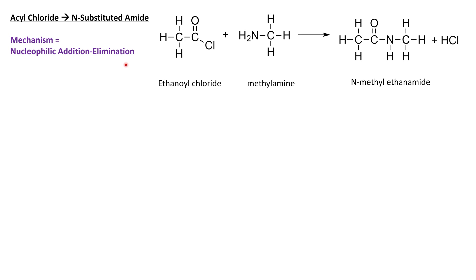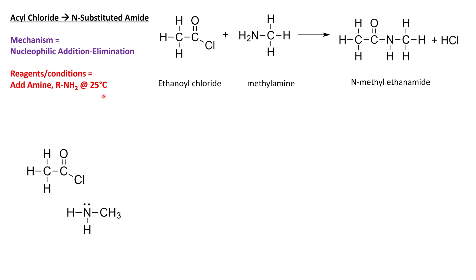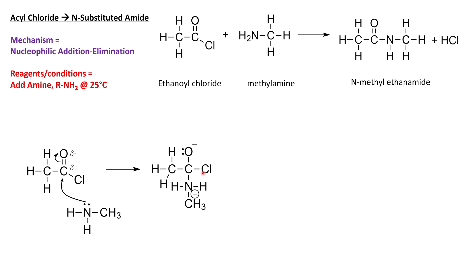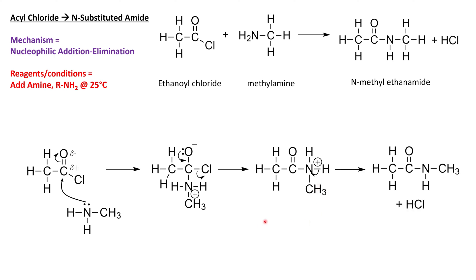Our mechanism is again nucleophilic addition elimination — all we need to do is add an amine to the acyl chloride, and this reaction will occur at room temperature. Let's examine our mechanism. Our amine acts as our nucleophile; it has a lone pair and we have a polar carbonyl bond. The lone pair from the nitrogen attacks the delta positive carbon, causing the carbonyl bond to break. We then eliminate the chloride ion by reforming the carbonyl, giving another positively charged intermediate. We move a pair of electrons from a N–H bond onto the nitrogen to get rid of H⁺, which pairs up with the chloride to make hydrogen chloride, giving us our product.